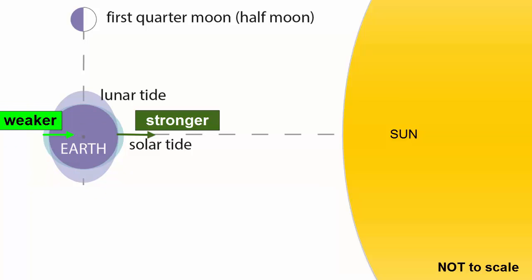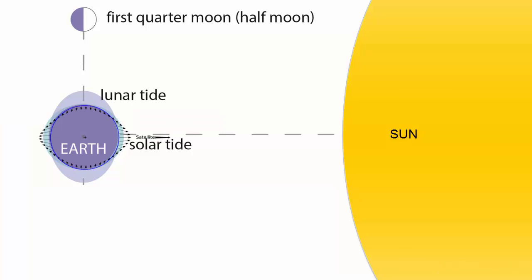The resulting force differentials cause again the water to get pushed away from the points on the surface at right angles to the Sun, and pushed toward the areas that are in line with the Sun. The lunar bulges are situated similarly with respect to the Moon.